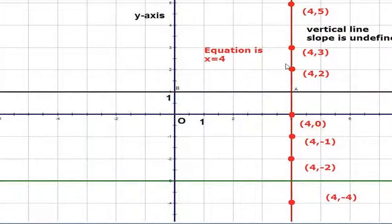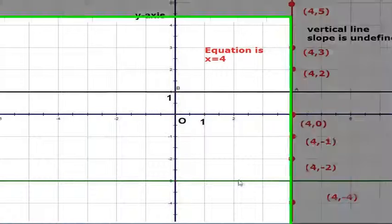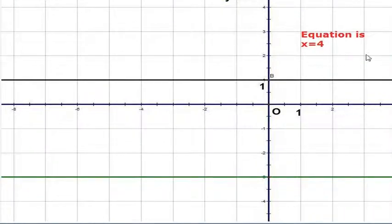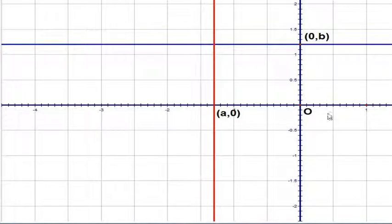You can see that no matter where we are, the x-coordinate is the same. Therefore, the equation of this line is x equals 4.